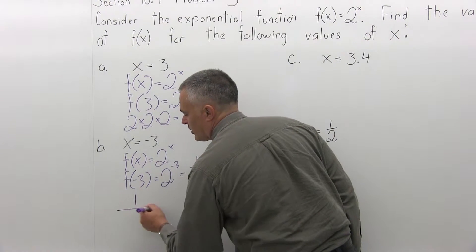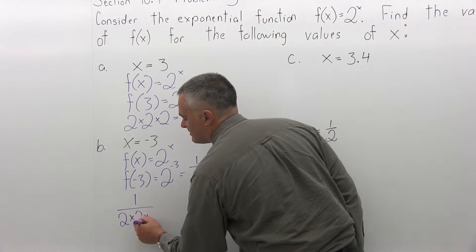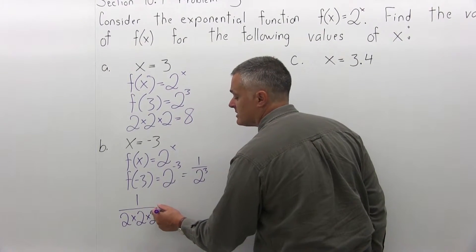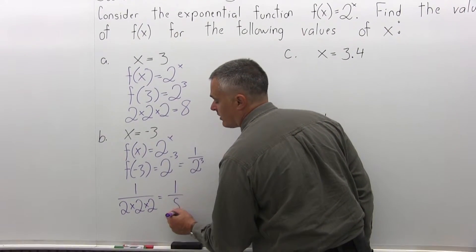So that is 1 over 2 times itself 3 times, 1 over 2 times 2 times 2, which is 1 over 8, or if you like, one eighth.